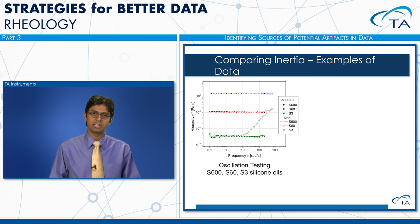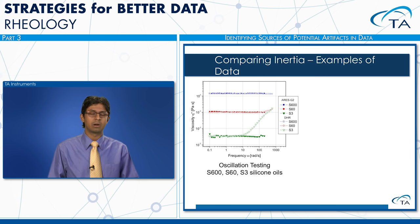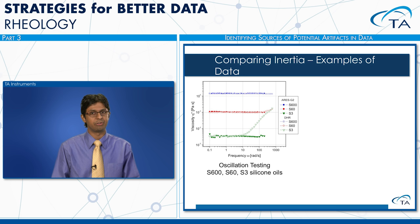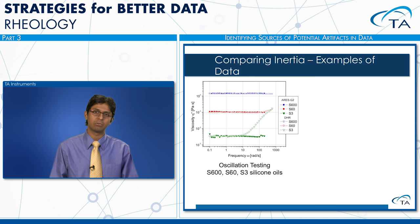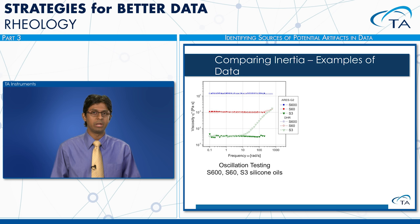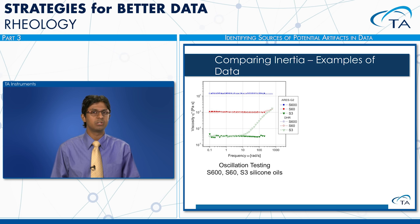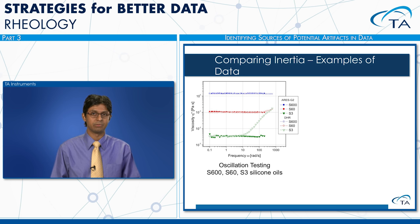Here are examples of inertial effects when dealing with low viscosity samples — frequency sweeps on three silicone oils: S600 (highest viscosity), S60 (medium), and S3 (low viscosity), on the dual head ARES G2 and single head DHR platforms. For S600, both instruments agree across all frequencies. For S60, there is slight uptick in complex viscosity at highest frequencies. For S3, data above about 10 radians per second shoots up significantly — a result of inertial effects.